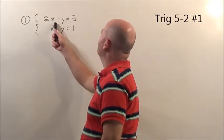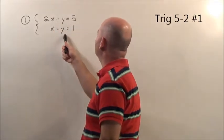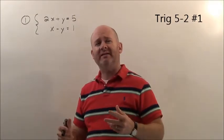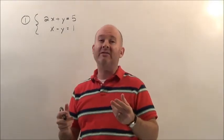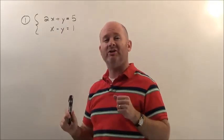Problem number one. It says 2x plus y is equal to 5, x minus y equals 1, wants us to solve this system. We've got to come up with x and y's values that are going to make this equation true and that equation true.